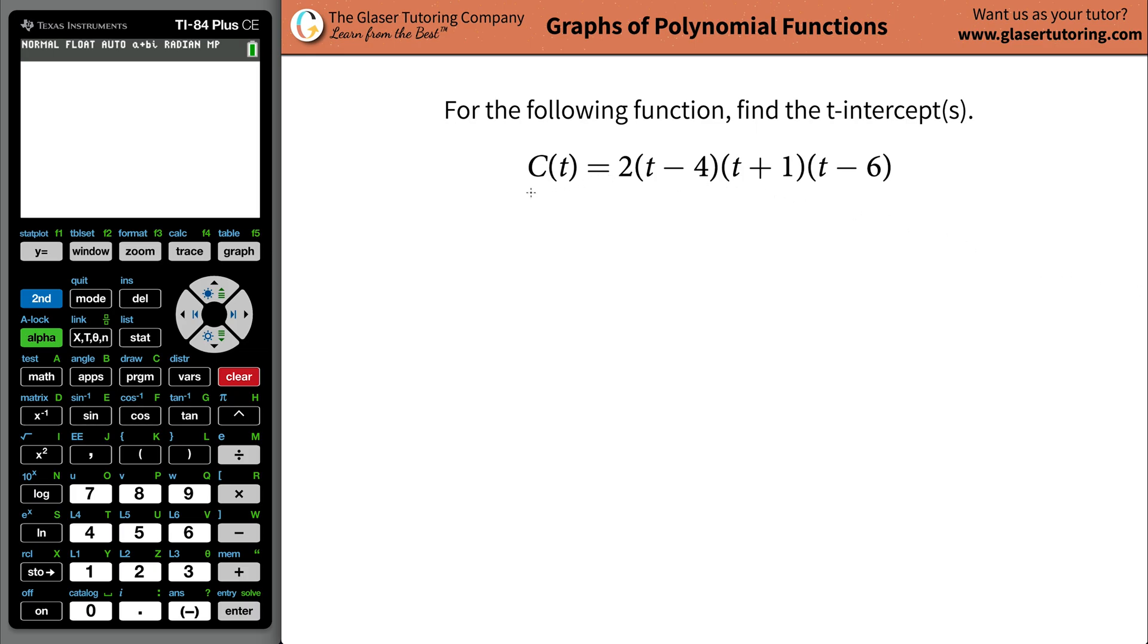All right, so here's the function we have: C(t) is equal to 2 multiplied by (t minus 4) multiplied by (t plus 1) multiplied by (t minus 6). I'm going to teach this to you algebraically but then we'll use the calculator to double check ourselves.